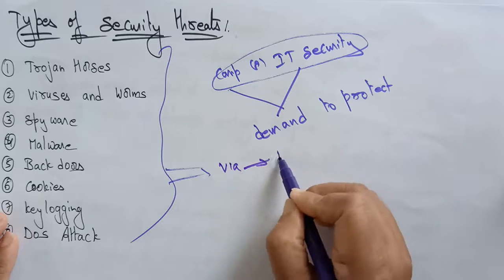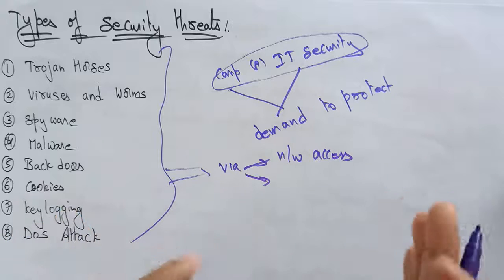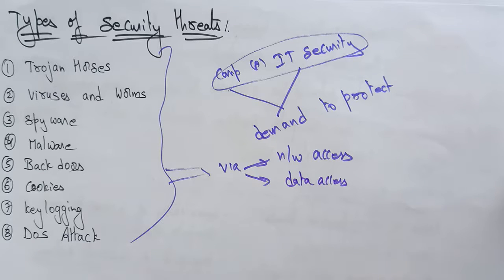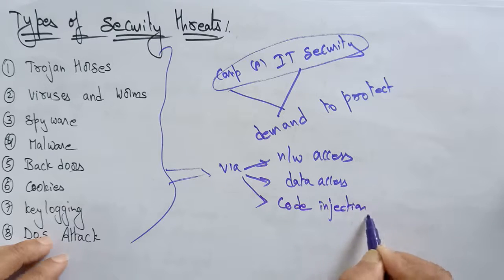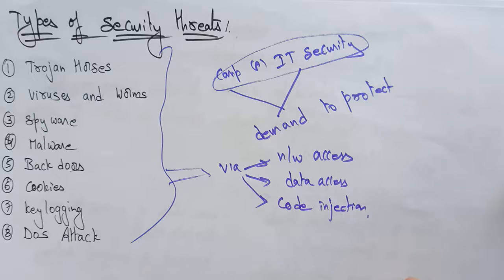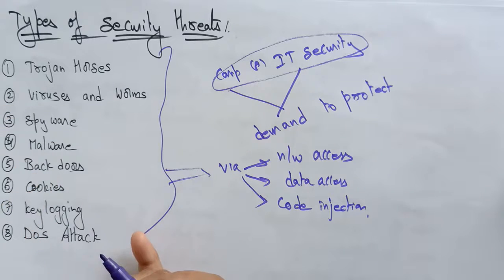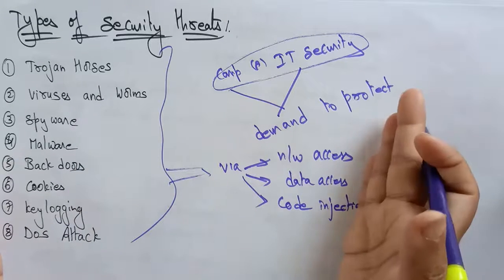How do these threats occur? These threats occur via network access or via data access. Data access means while you are working on pen drives, email attachments, or even code injection — when you install some software, a malicious code installed with it can harm your system, steal your data, or damage hardware and software. Each security threat does different kinds of damage.